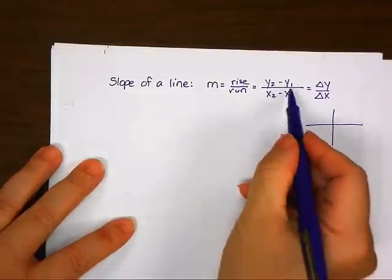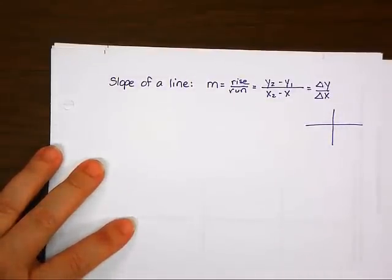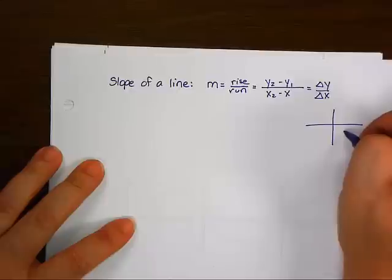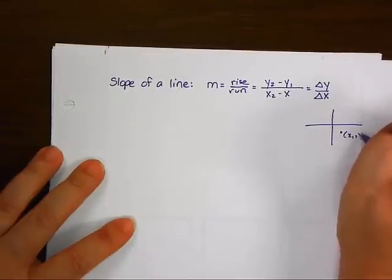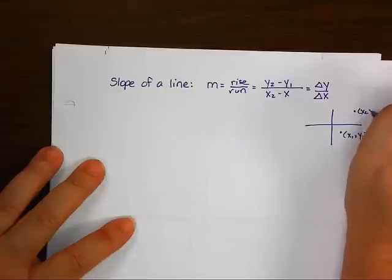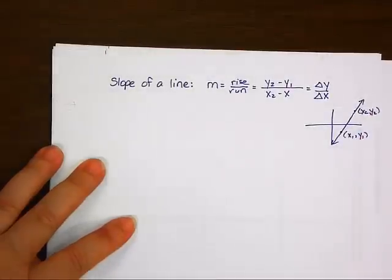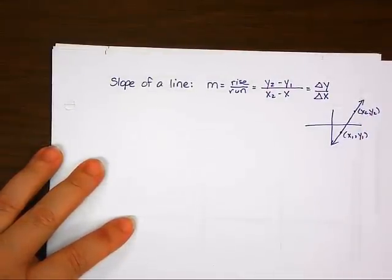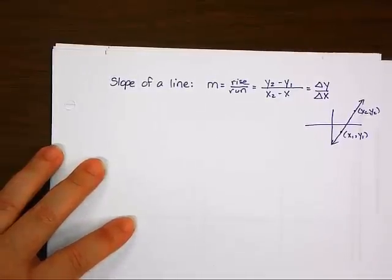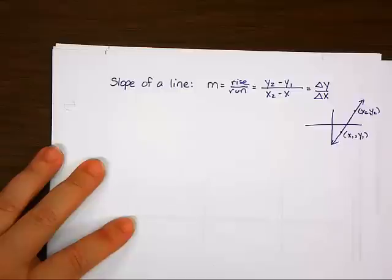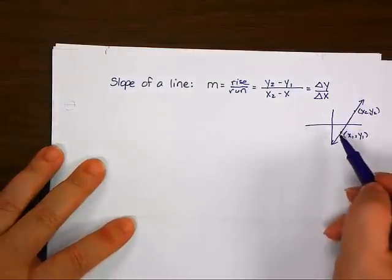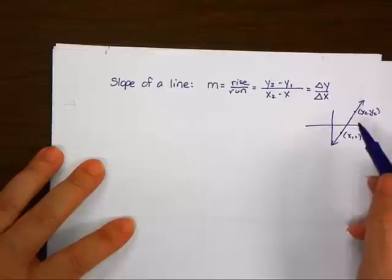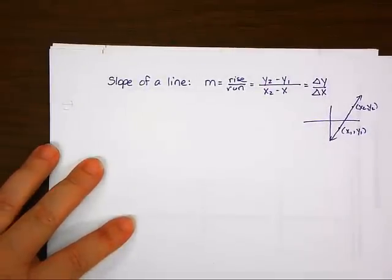What exactly are X1, Y1, X2, and Y2? They're points. So we have a point X1, Y1 and a point X2, Y2, and we're finding the slope of the line that connects them by subtracting the Y's and then subtracting the X's, which creates rise over run, which creates the slope.